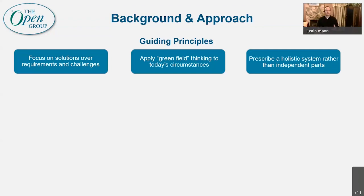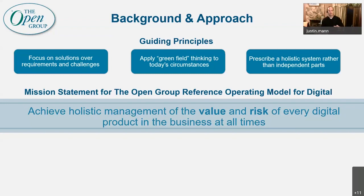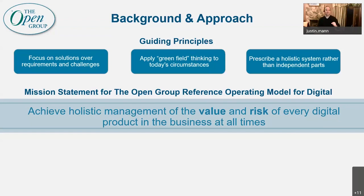So we wanted to make sure we were building a holistic system. The very next thing we agreed on was a mission statement — and surprisingly we did this very quickly. We wanted the goal of the operating model to achieve holistic management of the value and risk of every digital product in the business at all times. We didn't want to shoot too high, but we did want something bold. I'm going to circle back to this mission statement at the end, and I think we're all going to agree we've managed to do it.